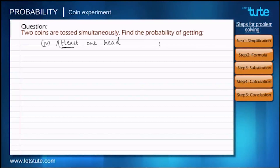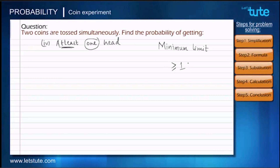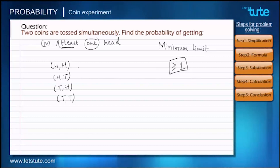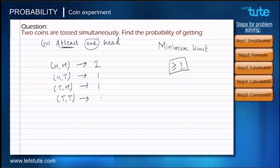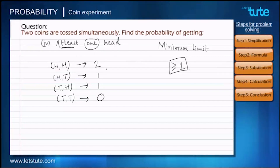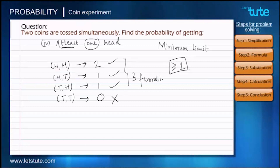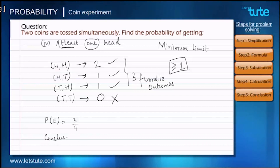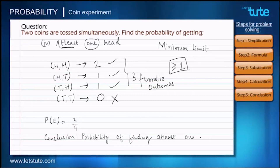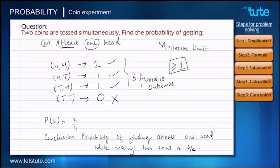For the fourth sub-question, we find the probability of getting at least one head. 'At least' refers to the minimum limit — here, a minimum of one head or more. The first outcome has two heads, the second and third have one head each, and the fourth has no heads. We include the first three outcomes, giving three favorable outcomes. Substituting into the formula: 3 upon 4. The probability of getting at least one head while tossing two coins is 3/4.